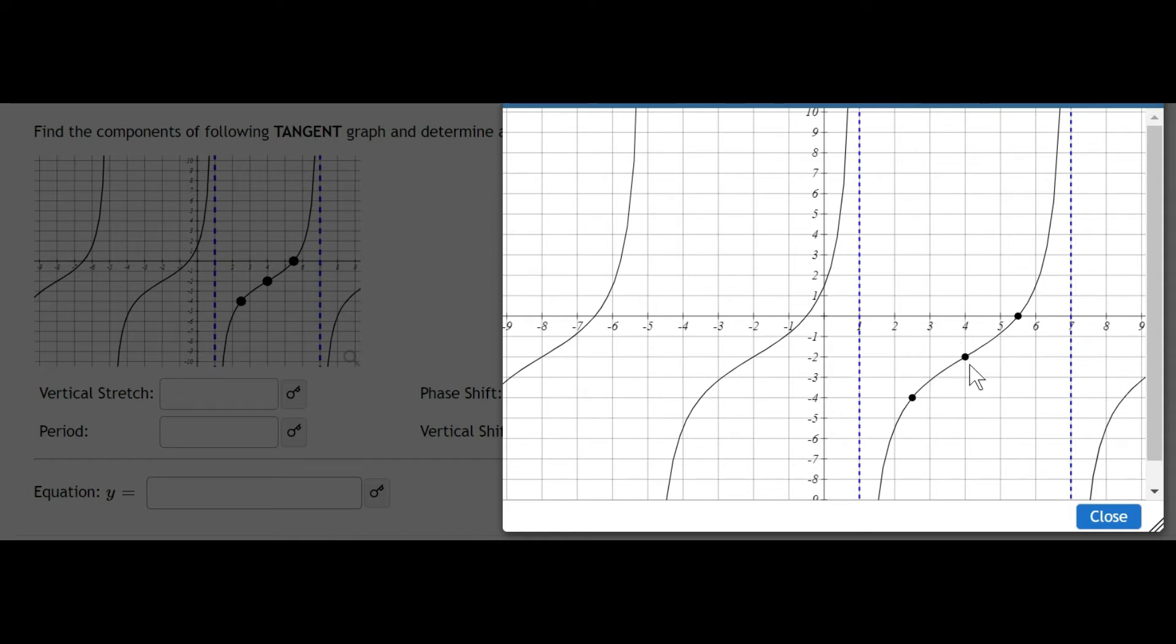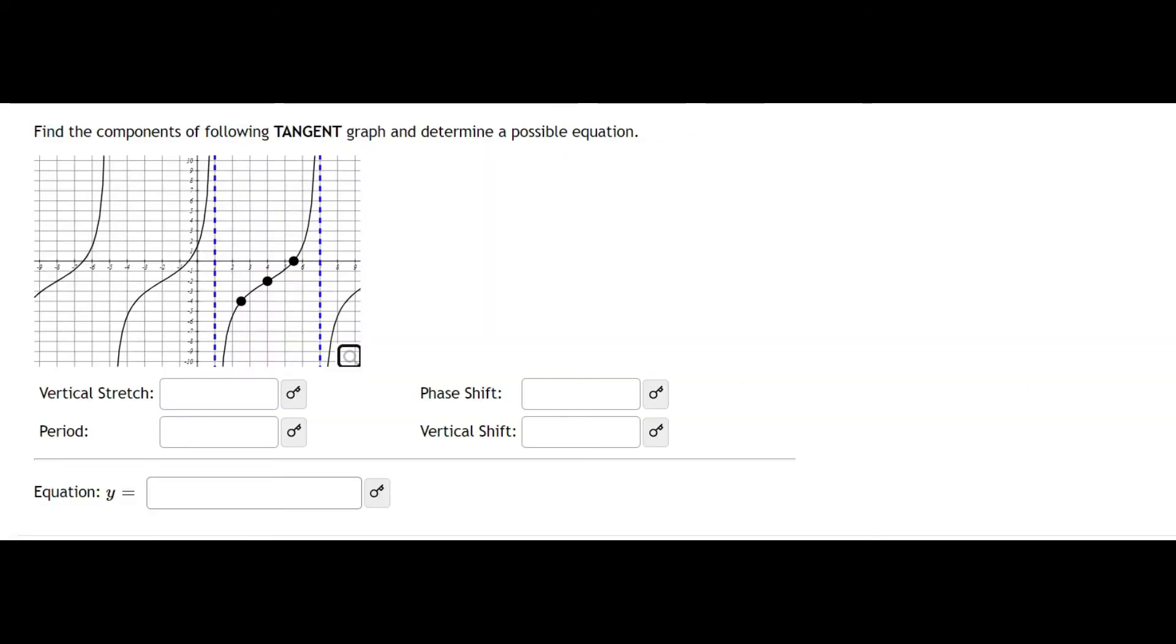So because this coordinate is 4, negative 2, the phase shift is 4 and the vertical shift is negative 2. So let's type those in. 4, vertical shift, negative 2.